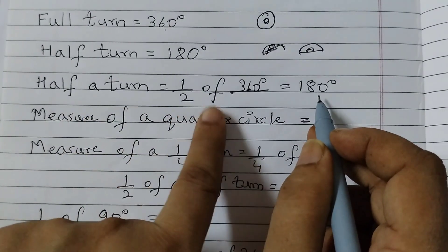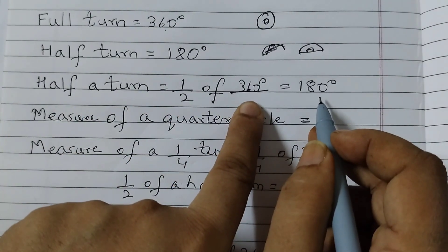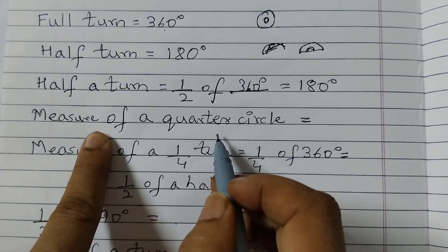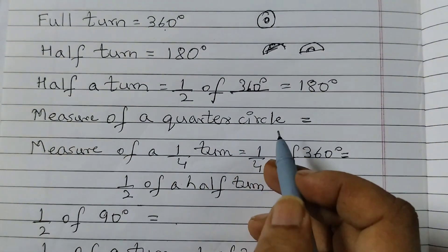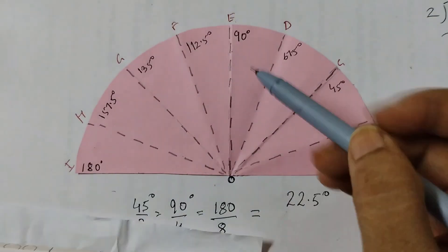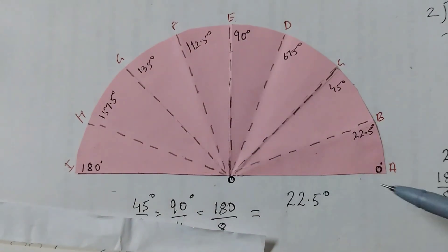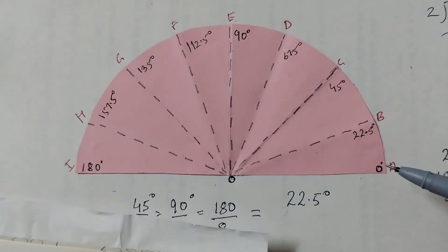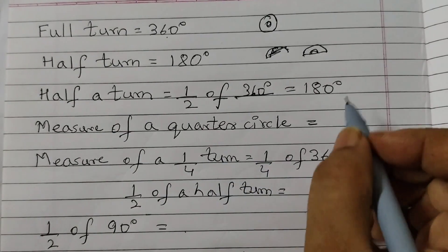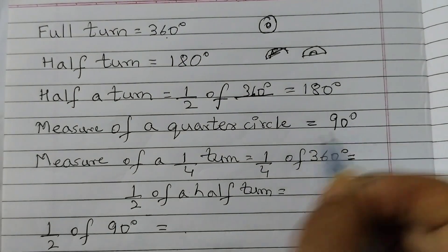Half turn is half of 360 degrees equals 180 degrees. Measure of a quarter circle: quarter circle means this circle here, from here to here, 90 degrees angle. This we call quarter. The circle is divided into 4 quarters. Measure of a quarter circle is 90 degrees.